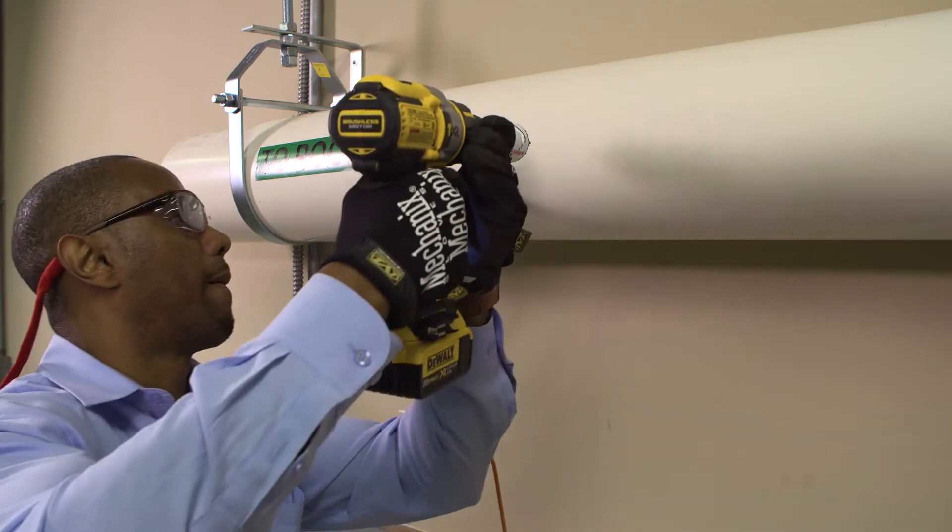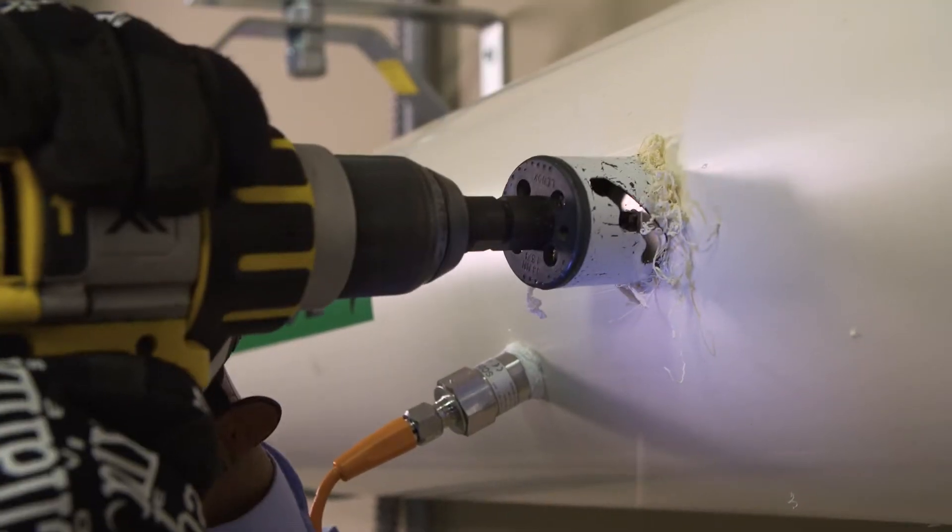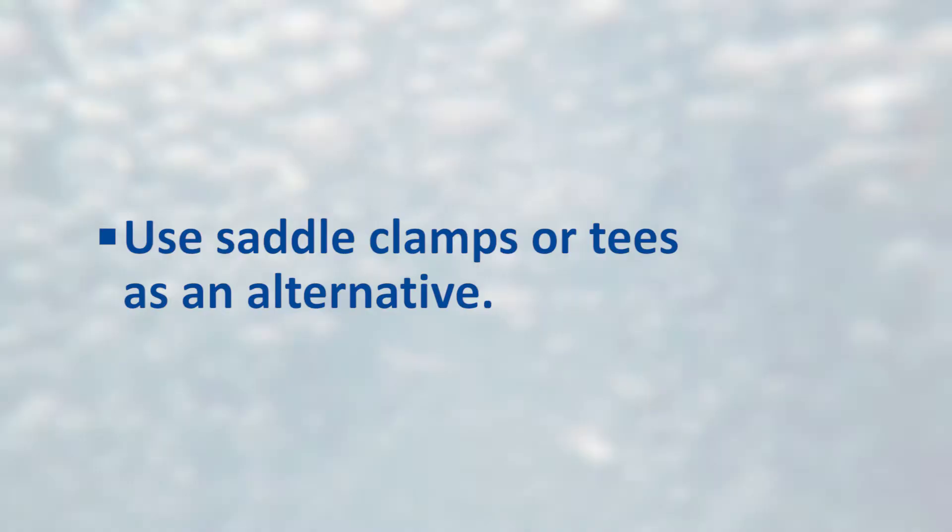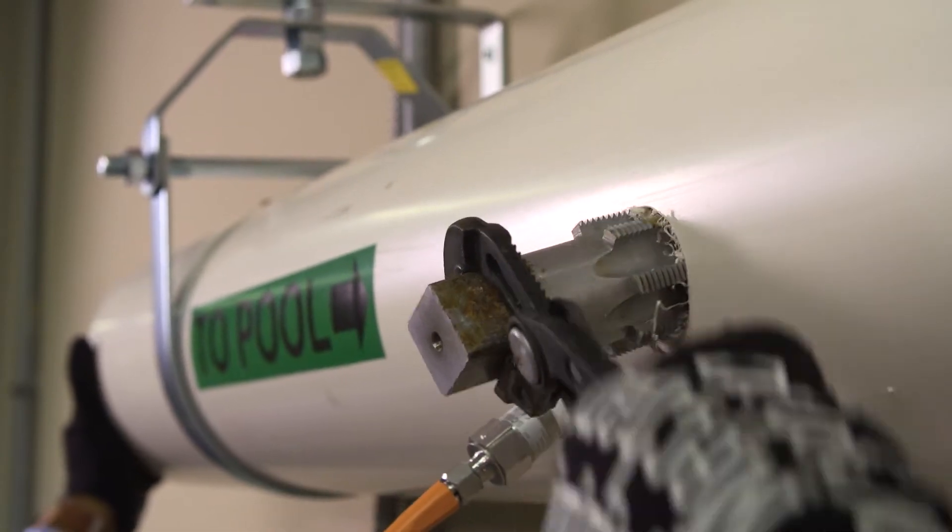Now install the booster pump and Venturi loop. Either drill and tap a 1.5-inch NPT National Pipe Thread hole downstream of the pool filter or use saddle clamps or T's as an alternative. The hole should be drilled on the side or bottom of the pipe if the pipe is horizontal.